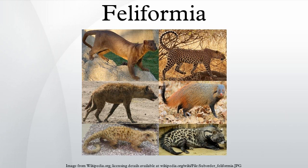Family Viverridae has 30 extant species and all have retractile claws. They are extant in southern Europe, Africa and Asia. They range in size from 500 g up to medium-sized carnivorans at 14 kg. They have long bodies and short legs and usually have long tails. Diet ranges from small mammals and insects through to crustaceans and mollusks.